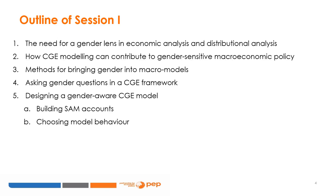The outline of session one is as follows. We will start by explaining why a gender lens is essential for economic analysis in general and for understanding inequality, discrimination, and poverty in particular. We will then discuss how CGE models can be used to support the formulation of gender-sensitive macroeconomic policies, and describe several approaches integrating gender into macro models. We will conclude by setting general principles for designing a gender-aware CGE model, relating both to constructing SAM accounts and choosing model behavioral assumptions.